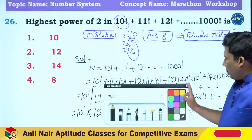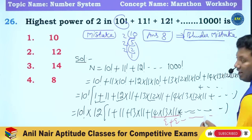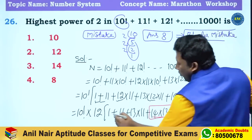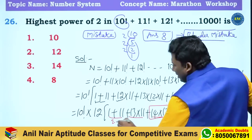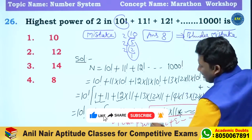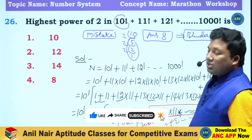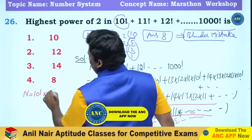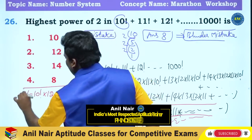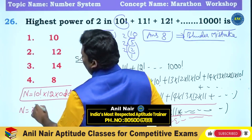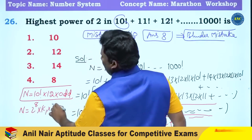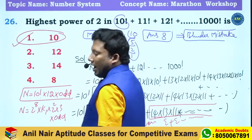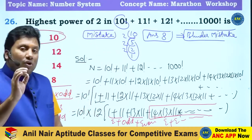Now logically, 14 into 13 into 11 — even times even times even — is even. 1 plus 11 is 12, which is even. 13 into 11 is odd. So the bracket is even plus even plus odd, which is odd. That means we get 10 factorial into 12 into odd. The highest power of 2 in 10 factorial is 8, and 12 contributes 2 squared, so the answer is 8 plus 2 equals 10.